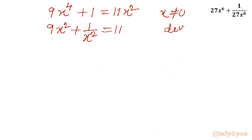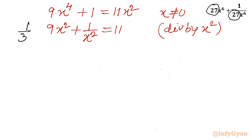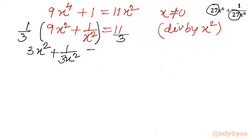Division by x² on both sides. Now you can see our expression requires the same number. So I will consider division by 3 on both sides. So I will write 1/3 on both sides, giving 3x² + 1/(3x²) = 11/3.